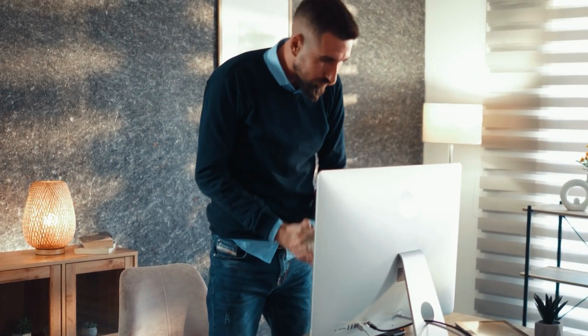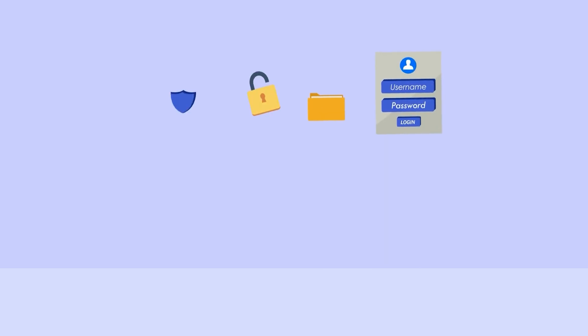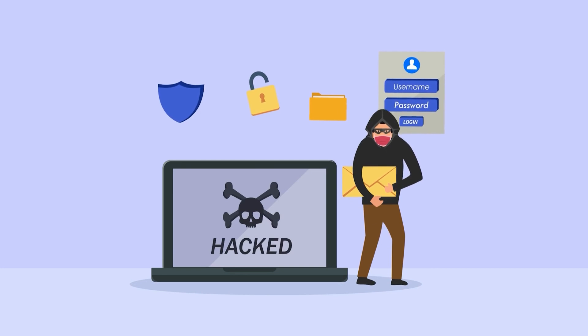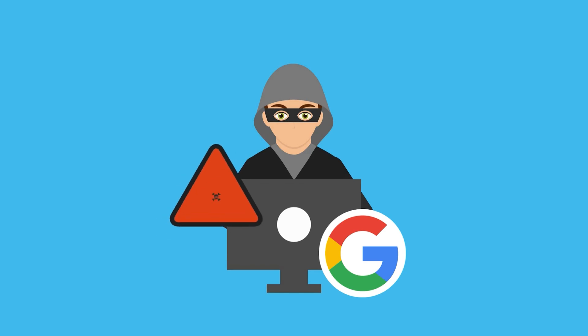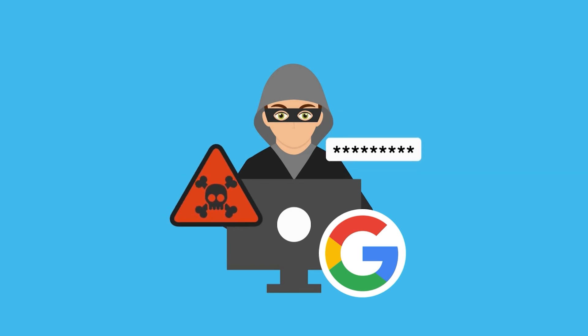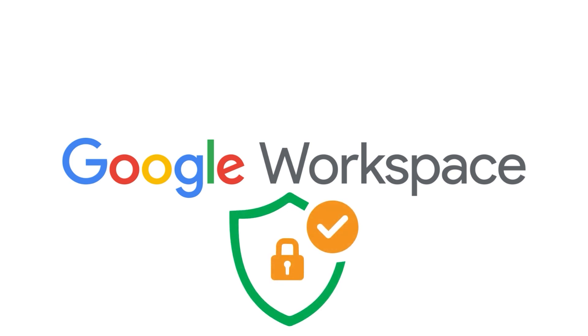Once someone has access to an internal email account, they don't have to pretend to be your email address from a fake account outside the business. Once they're into an internal email address, they can very quickly start to make real damage by using a real email address to send fake phishing emails within the company. That's just one example, but once someone has access to a Google account, they've pretty much got access to the whole house. That's why we want to do as much as possible to lock down our workspace account.